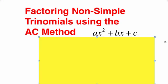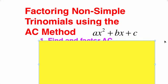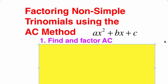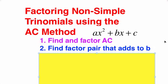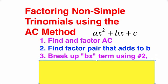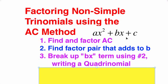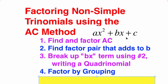The AC method uses a very specific technique. First, you find AC by multiplying A times C, then list all the factor pairs. Next, find the factor pair that adds up to B, and use that factor pair to break up the Bx term so that you have a four-term polynomial, or a quadrinomial. Once you have a quadrinomial, you factor by grouping, and then you're done.